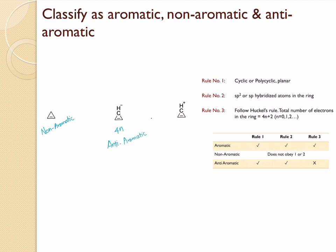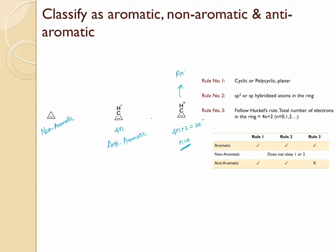The third structure is cyclic, satisfying rule one. All atoms are sp2 hybridized, satisfying rule two. For rule three, it has only one electron pair — two electrons total. Substituting n=0 into 4n+2 gives 2, so this follows Hückel's rule. All three rules are satisfied and therefore this compound is aromatic.